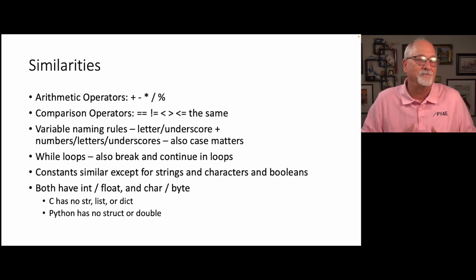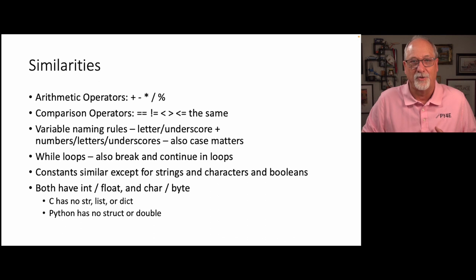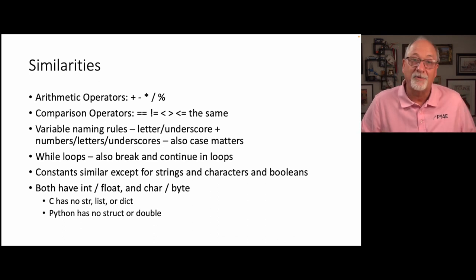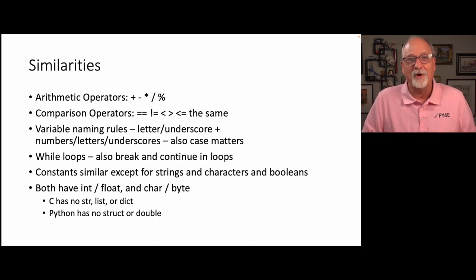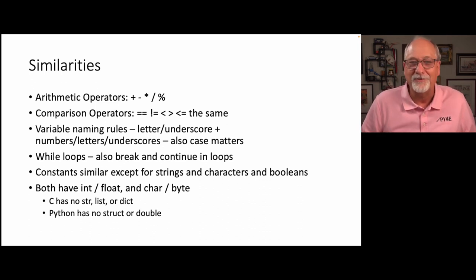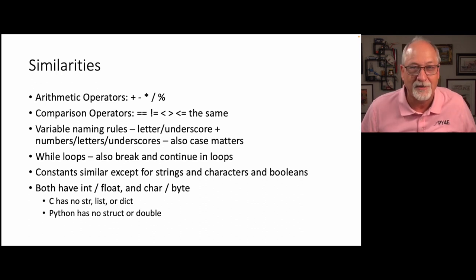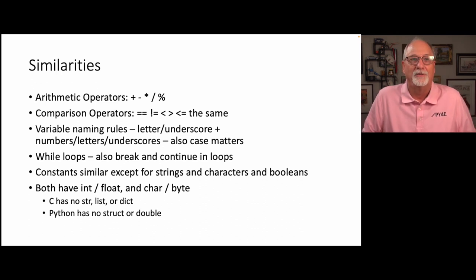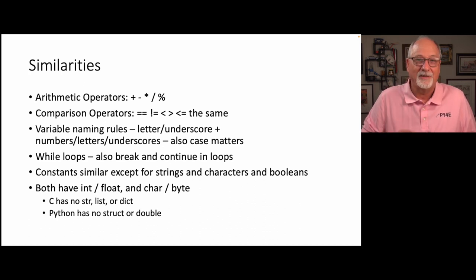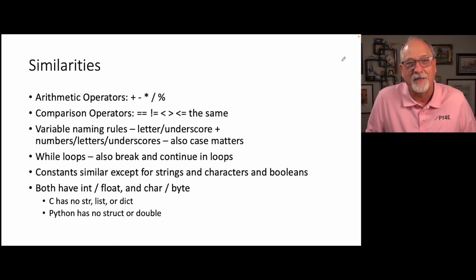Variable naming rules are the same: you start with a letter or underscore, then numbers, letters, and underscores, and case matters in both languages. While loops, the concept of break and continue — I love break and continue in Python, and I love them in C too. Maybe because I learned C first.